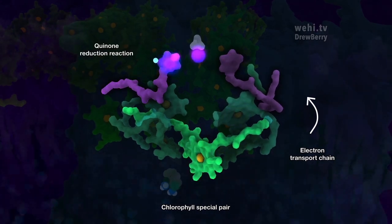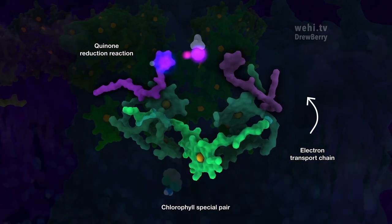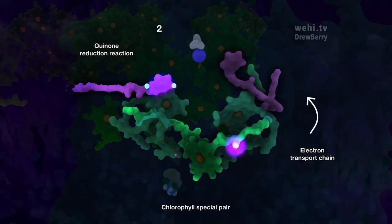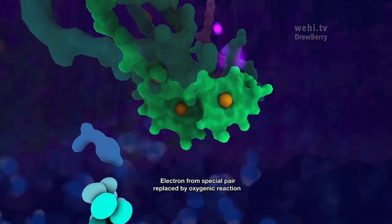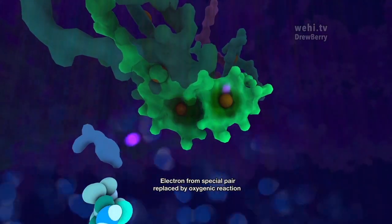At the top of the reaction chain, two electrons are accepted by a quinone molecule which then ferries the energy to other steps in photosynthesis. The loss of an electron by the chlorophyll special pair results in a positive charge because of the missing electron.